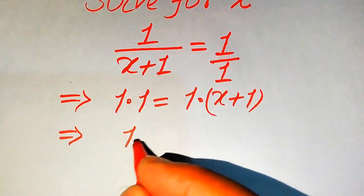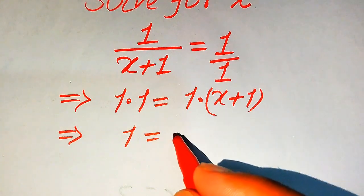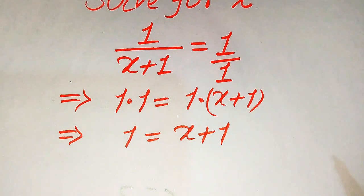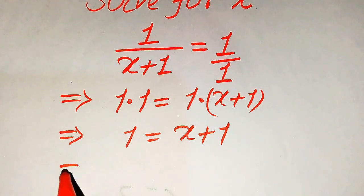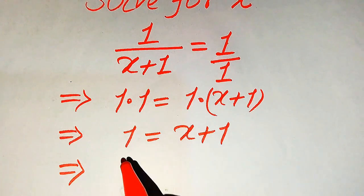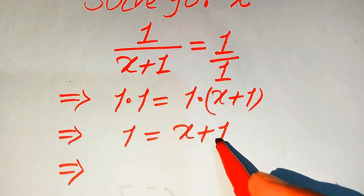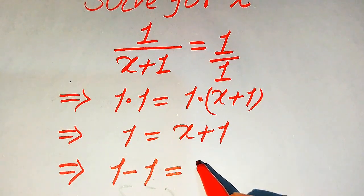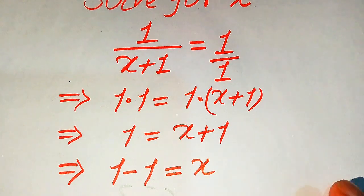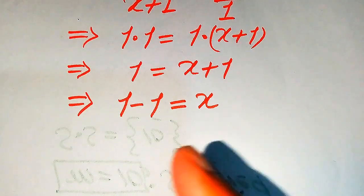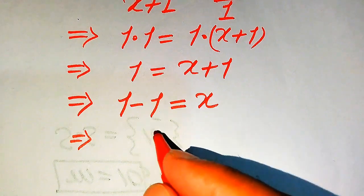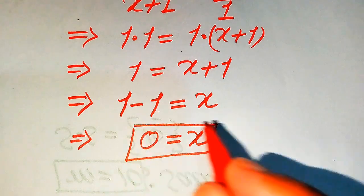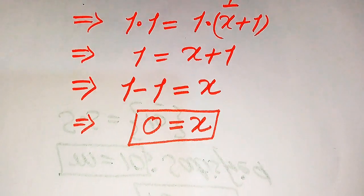In the next step we have 1 times 1 becomes 1, and 1 times of x plus 1 is equals to x plus 1. Because we are solving this problem for the values of x, we will move this plus 1 to the left hand side. This is a positive term, so when we move it to the left hand side it becomes negative, and we get only x on the left hand side. So we have 1 minus 1 and 1 minus 1 becomes 0, is equals to x.